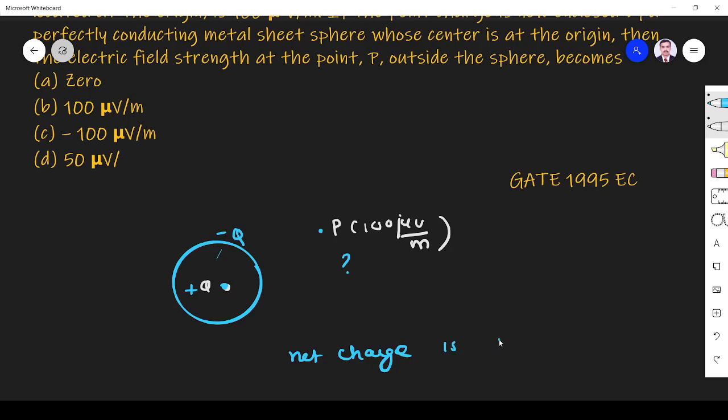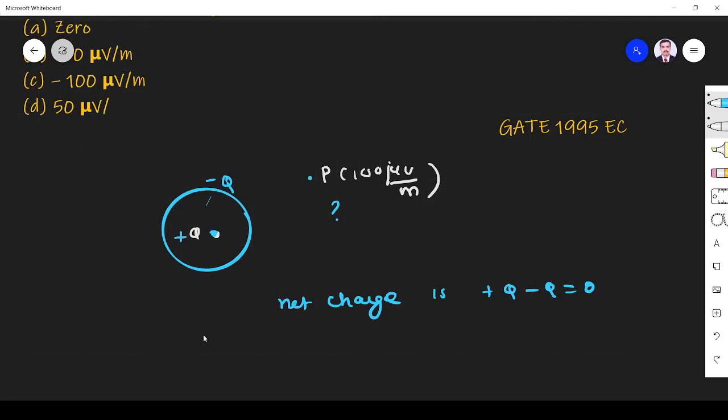Net charge is +Q and -Q equals zero. So if there is no charge, charge zero means there is no flux as per Gauss's law.